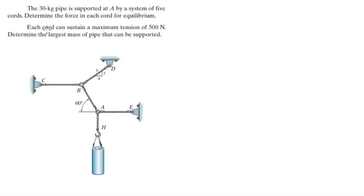Alright guys, we have two problems. For the first problem, a 30 kg pipe is supported at A by a system of five cords. Find the force in each of the cords for equilibrium. And the second one, they tell you that all the cords can sustain a maximum tension of 500 N, then what is the maximum mass that the system can support.